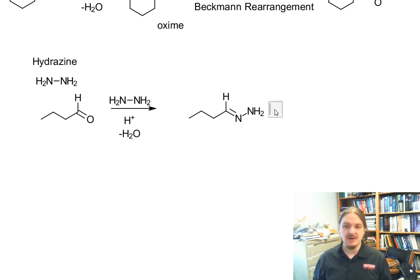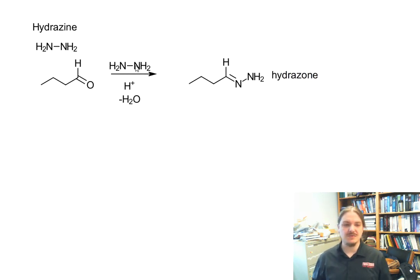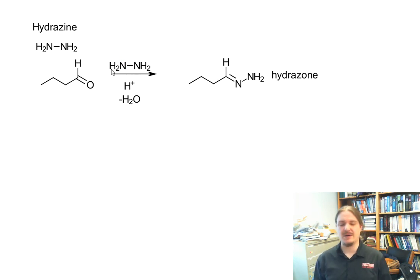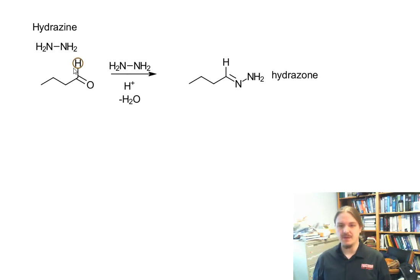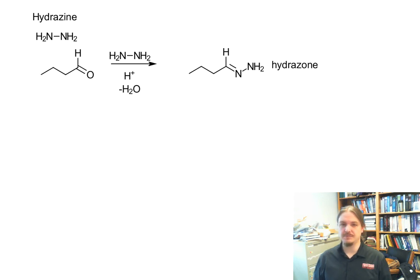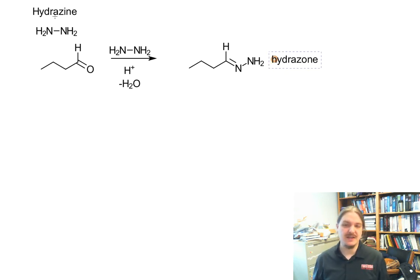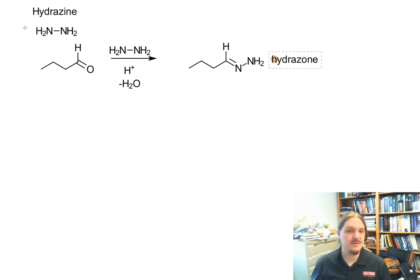You form this thing called a hydrazone. There are other hydrazines — a whole class of compounds. You can have substituted hydrazines. A popular one is phenyl and dinitrophenyl hydrazines, which were used in qualitative tests for aldehydes and ketones because they formed nice red precipitates. Those methods have been supplanted in many cases by spectroscopy, but they're still used in some applications.